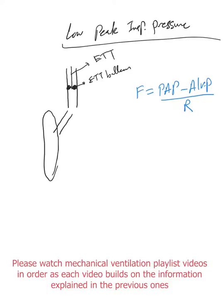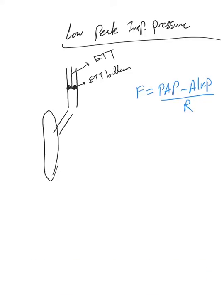We keep saying increased peak inspiratory pressure, high peak inspiratory pressure, but also in the opposite - the peak inspiratory pressure can become really low and that could indicate a problem. Let's look at flow.